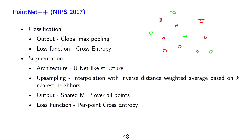A red point picks the three closest neighbors, computes the distances, and then does a distance-weighted average of these k closest neighbors. As output, the shared MLP is applied over all points and the loss function is per-point cross entropy.